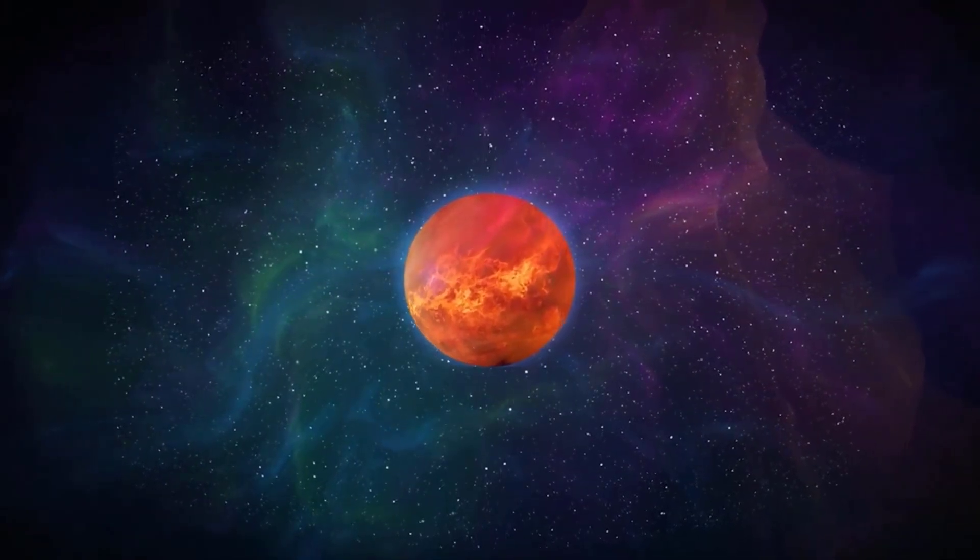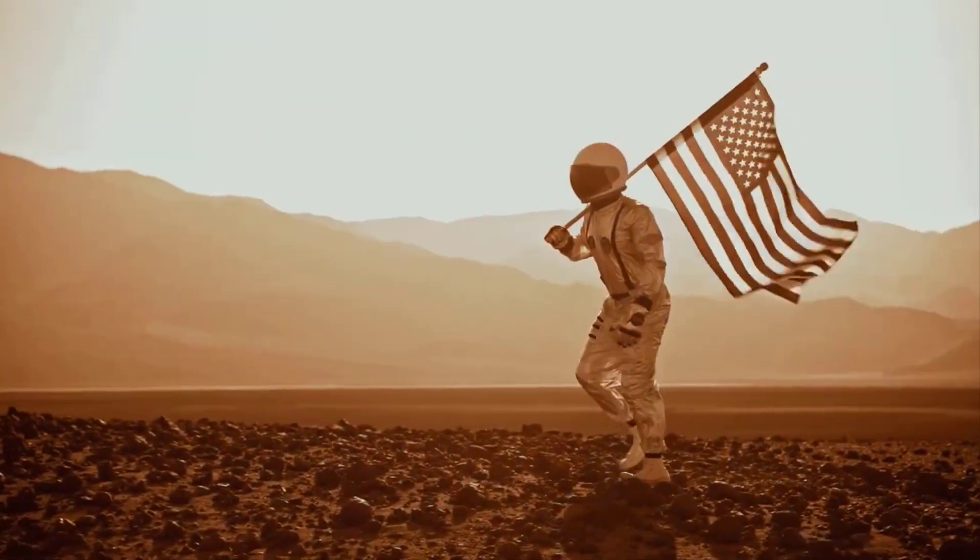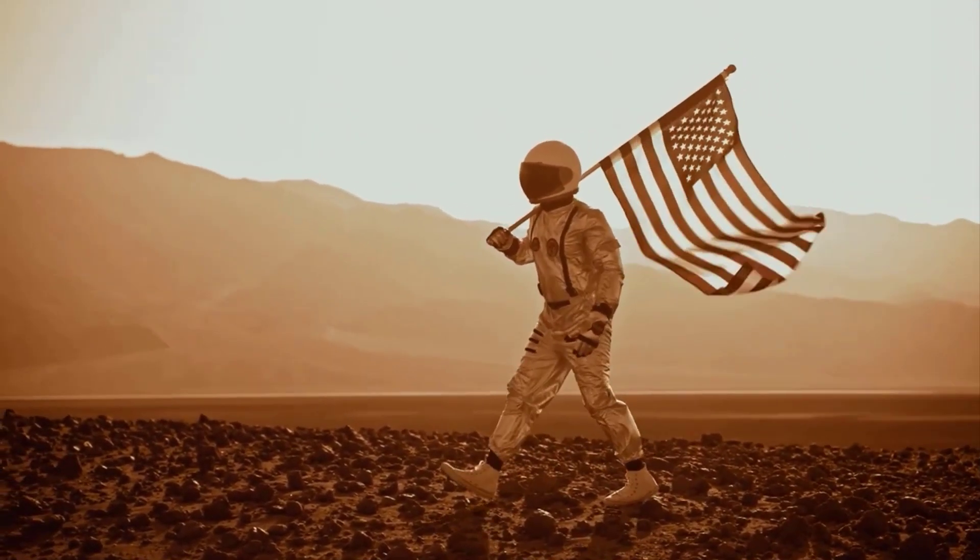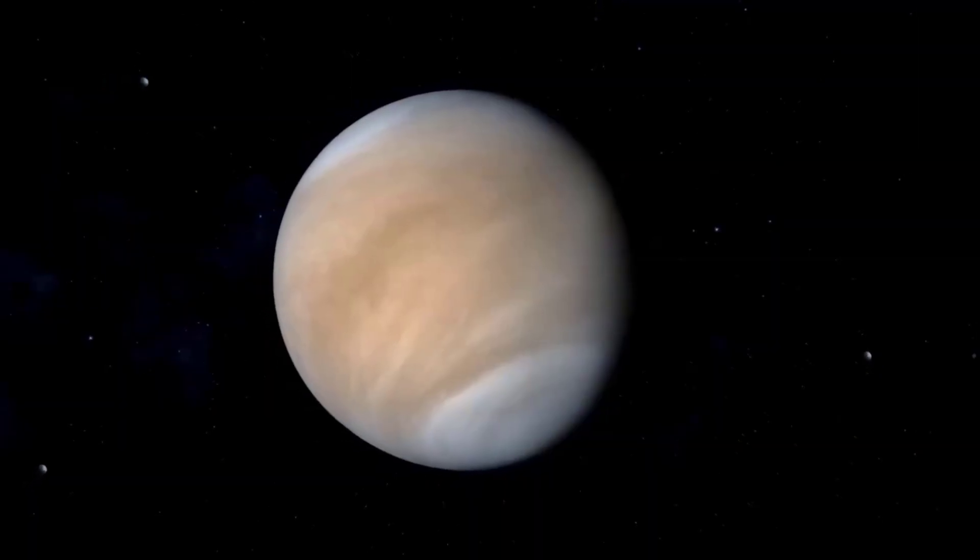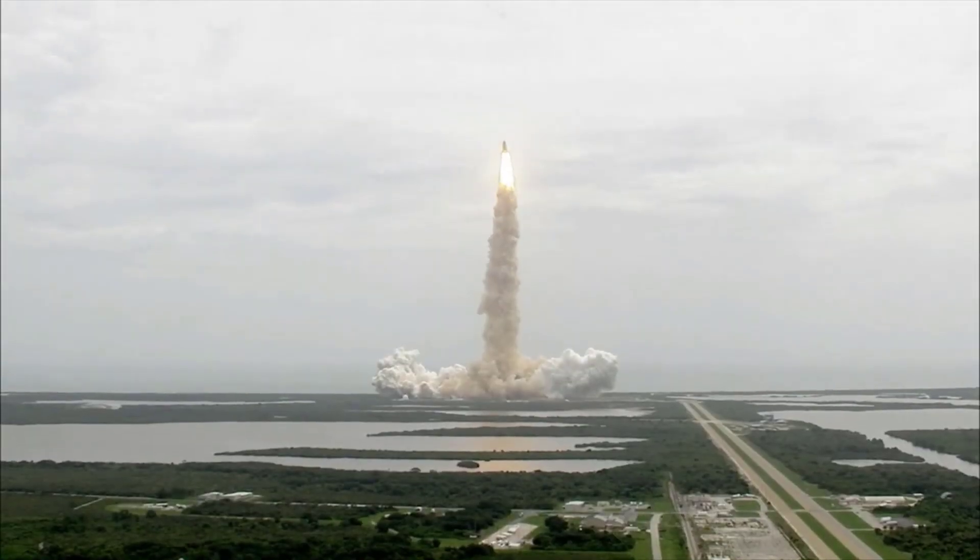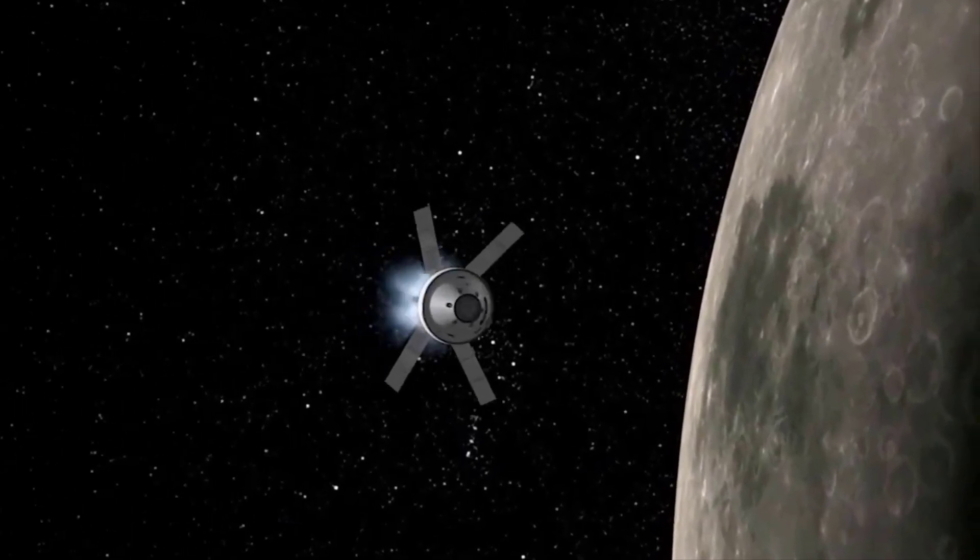Although the surface of Venus is like a blast furnace, a cloud layer just 31 miles below the top of its atmosphere may reach temperatures as low as 86 degrees Fahrenheit and has a pressure similar to that at ground level on Earth. Many planetary scientists, including Carl Sagan and Harold Morowitz, who proposed the idea 53 years ago, have hypothesized life may exist there.